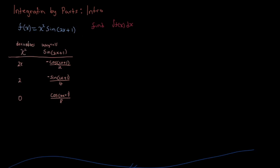So what do I mean by that? Here x squared: you're going to take the derivative of x squared, so it goes to 2x. You're going to take the derivative of 2x, it goes to 2, and you take the derivative of 2 and it goes to 0. So you just keep taking the derivative until you get to 0 — that's where you stop.